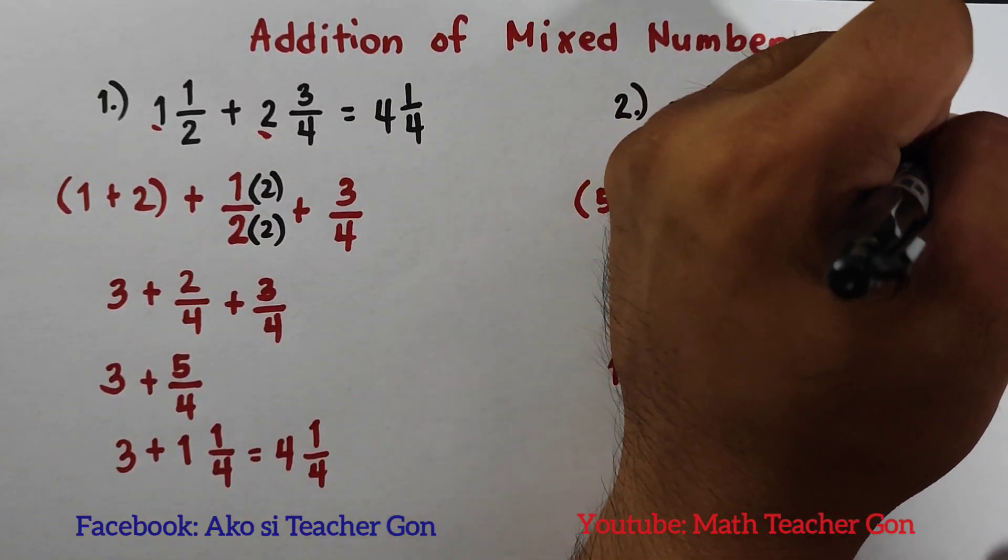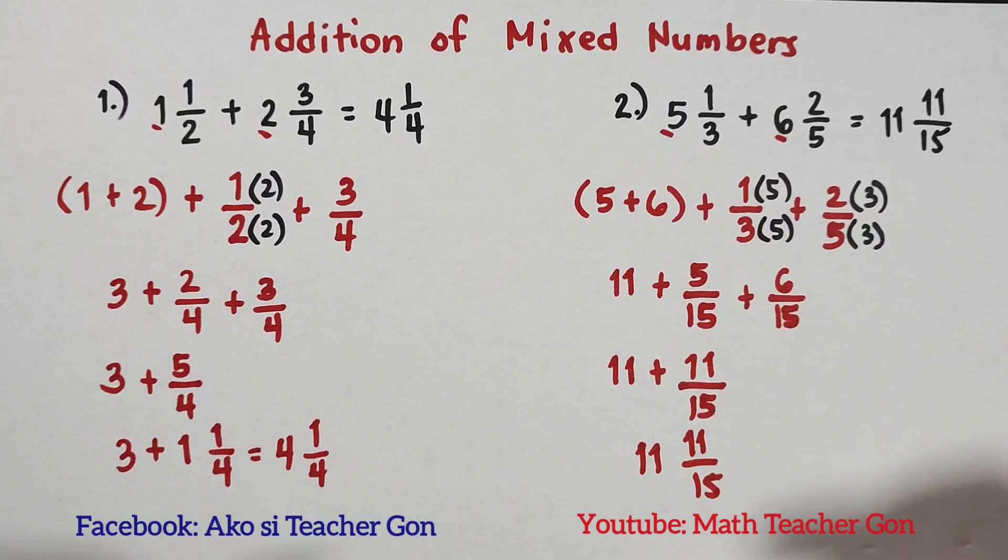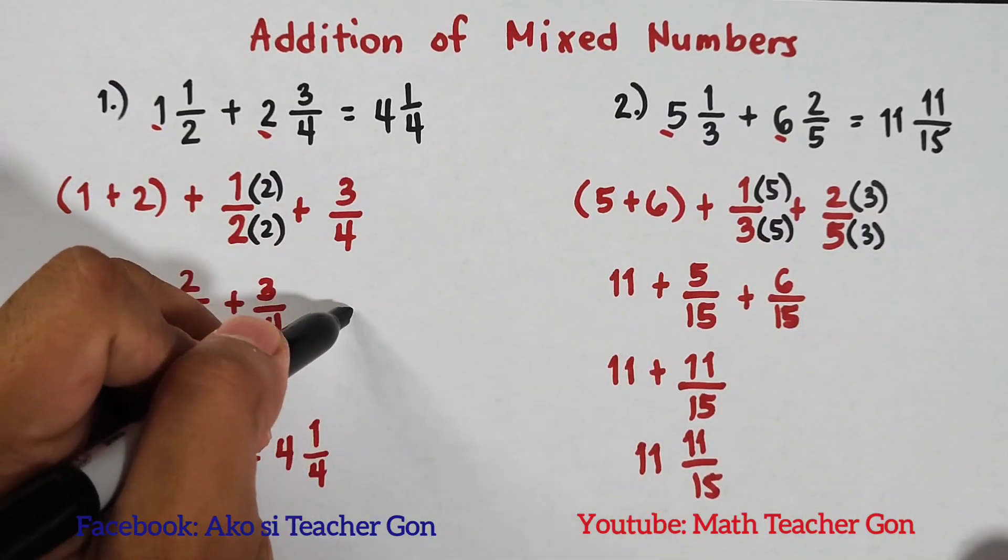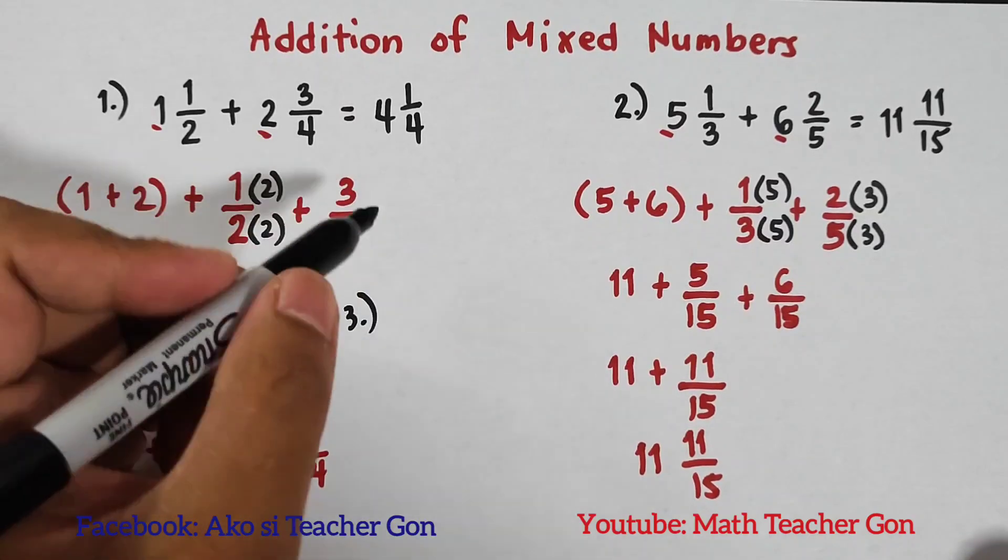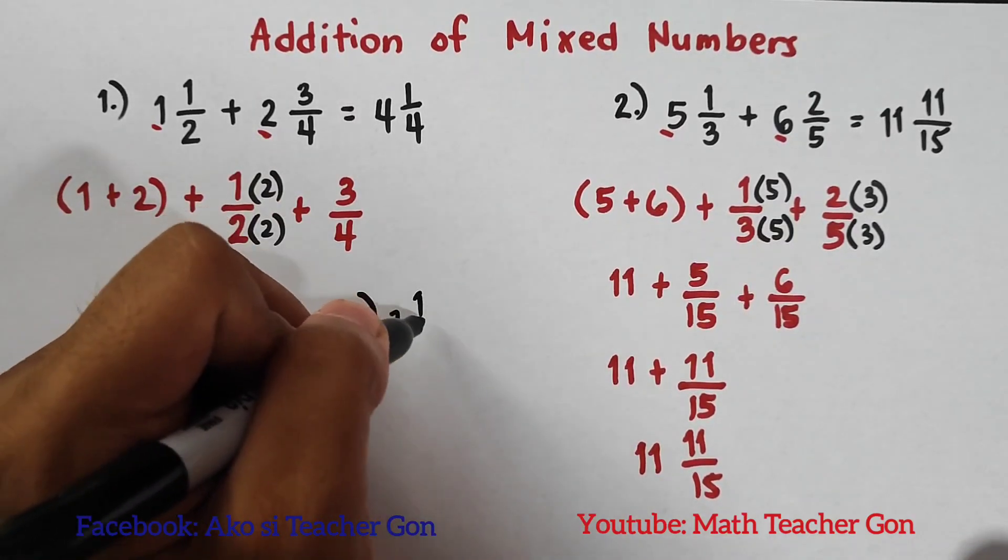Now guys, as part of our routine, I will give you another example for you to answer. And I hope na makita ko sa atin comment section. For number three we have 3½ + 5⅔. What is your answer?